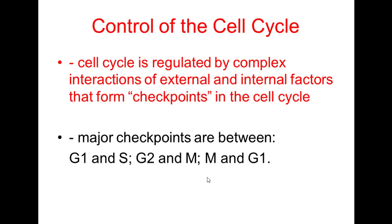The control system is a very complex set of interactions. The cell cycle is regulated by complex interactions of both external and internal factors. These form checkpoints in the cell cycle. The major checkpoints are between G1 and S, between G2 and M, and between the M stage and G1.